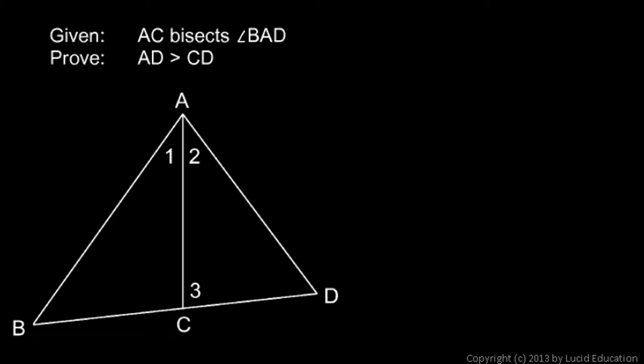All right, let's think about our plan of attack here. If AC bisects angle BAD, then these two angles have to be the same. Now look down here at angle 3. Angle 3 is an exterior angle for this triangle, and an exterior angle is always greater than either remote interior angle, so angle 3 here has to be bigger than angle 1. And if angle 1 and angle 2 are equal, then angle 3 must also be bigger than angle 2.